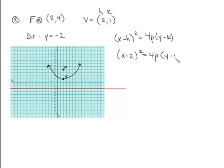So Y minus 1. And now our job is to just fill in the P. And we can see from our picture that we have to go up 1, 2, 3 units for P to get to the focus from the vertex. So P is equal to positive 3.